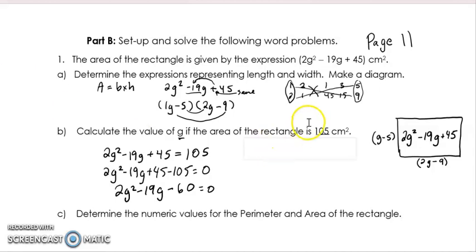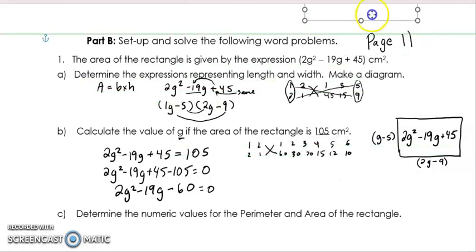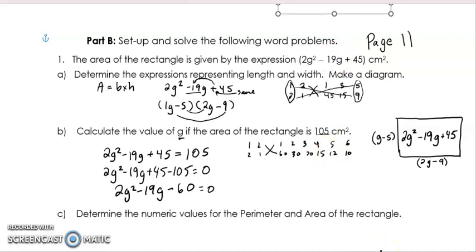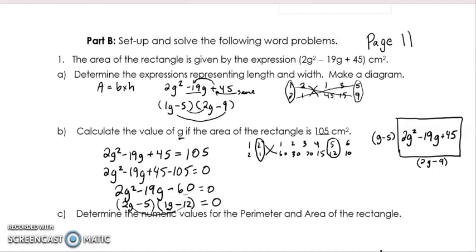I have the factors of 2 and the factors of 60 ready to do this factoring. I've got to find pairs that multiply to give 60 and subtract to give 19. Jumping to the answer — 2 times 12 is 24, and 1 times 5 is 5. 24 minus 5 equals 19. So one bracket is going to be 2 and 5, the other bracket is going to be 1 and 12, and they're both going to have g's. Because it has to give a negative 19g, the larger product — 2 times 12 — is going to be negative, and the smaller product is going to be positive.